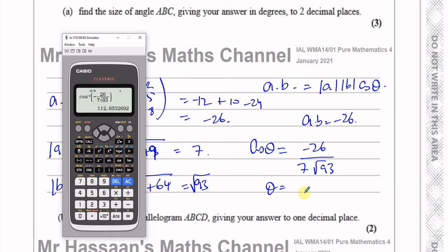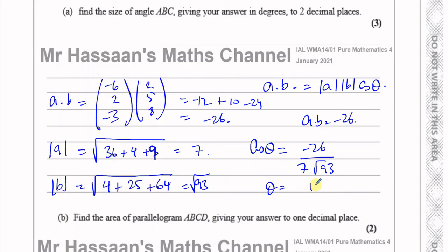And that gives you 112.653, which is 112.65 degrees to two decimal places. So that's the answer for part a.